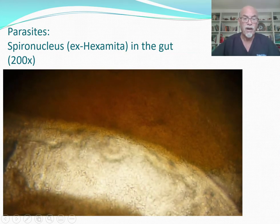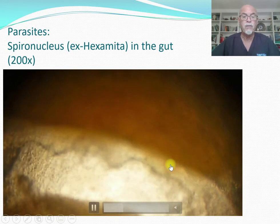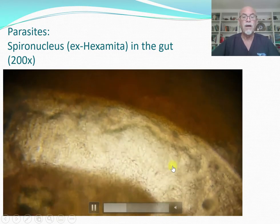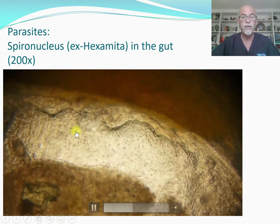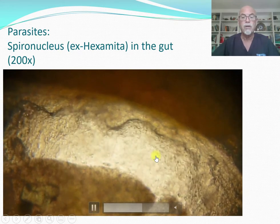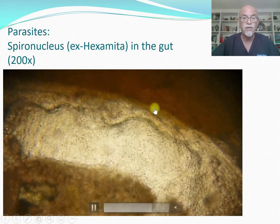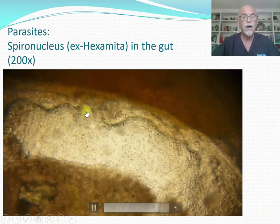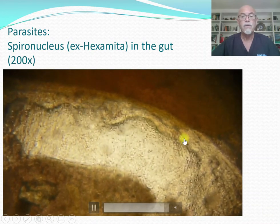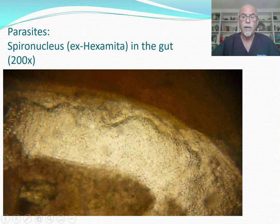Here we see the parasite Spironucleus — formerly called Hexamita — in the gut. A massive amount swirling around here in the gut at 200x magnification. This of course has an impact on the gut wall, causing damage and risk of bad bacterial infection and a weakened immune system.